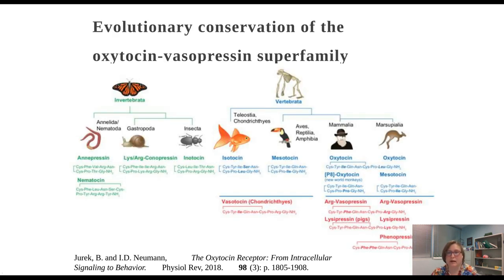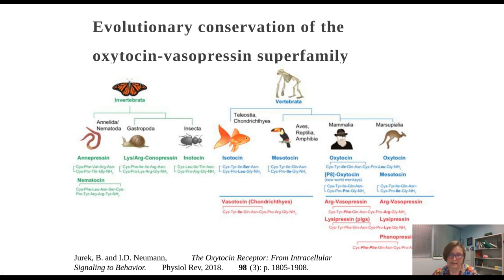Why are we interested in the oxytocin and arginine vasopressin superfamily? This family is highly evolutionarily conserved. In invertebrates, there is a single analog associated with various species, including anapressin in annelids and nematocin in nematodes. In gastropods we see conopressin, and in insects, inotocin. About 600 million years ago in fish, there appears to be a gene duplication — the first time we see both an oxytocin analog and a vasopressin analog in vertebrates.